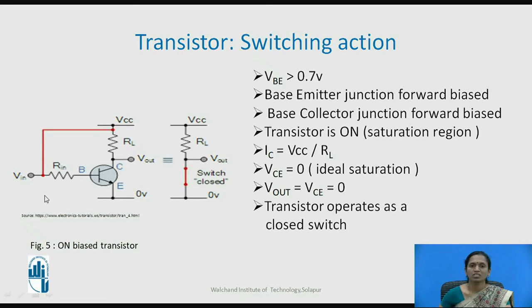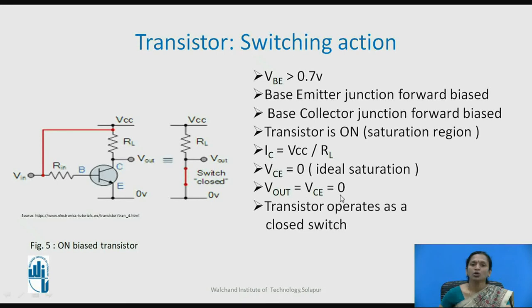When the input is greater than 0.7 V, the input junction is forward biased and the output junction is also forward biased. The transistor is now ON, with the operating point in the saturation region. Maximum current Vcc/RL flows through the collector. The output voltage is ideally 0, but practically 0.1 to 0.3 V, giving a low voltage level at the output. In this way the transistor acts as a closed switch.